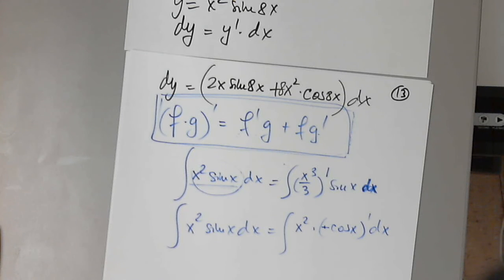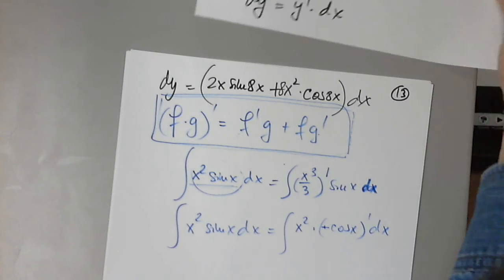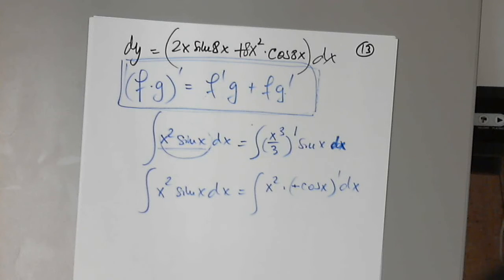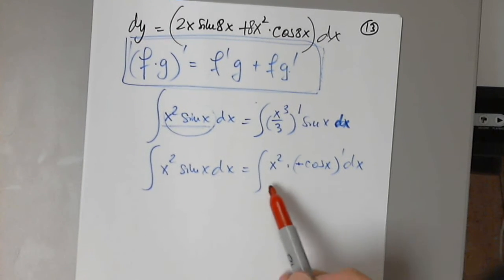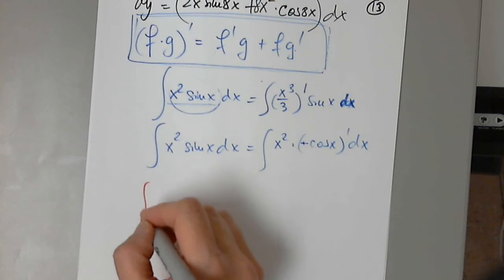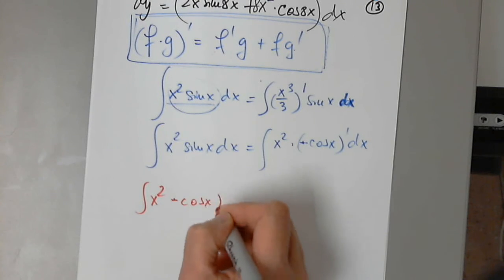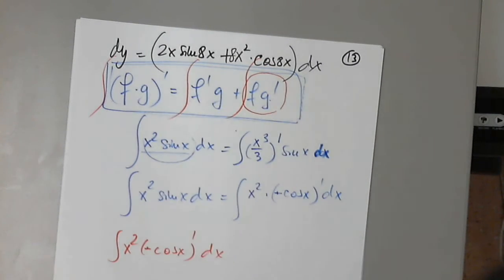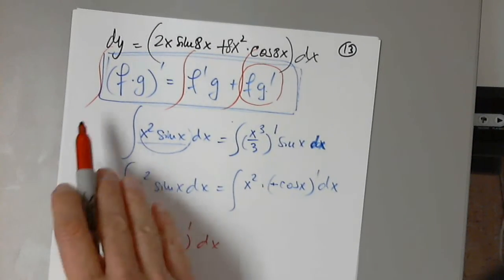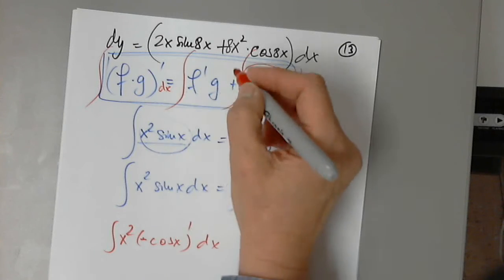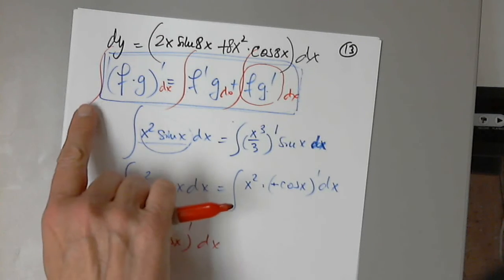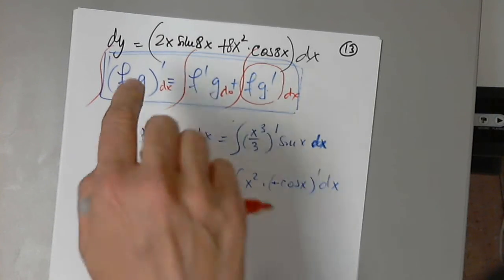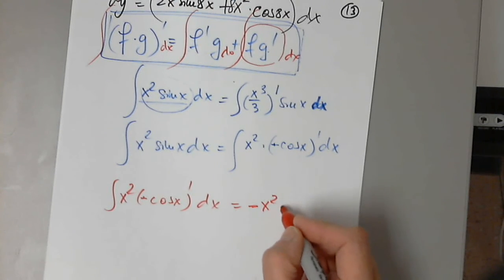When I differentiate x cubed over 3, I bring 3 down and simplify to x squared. When I differentiate negative cosine x, I get negative sine x times negative 1, which is sine x. Let's continue with the second option. I want to determine the integral of x squared times negative cosine x prime dx. I'm basically integrating the right-hand side. When I integrate a derivative, I get the function — which is negative x squared cosine x.